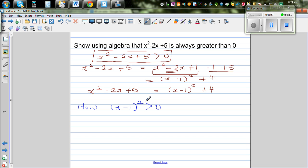This is always going to be positive because it's always greater than 0. It cannot be 0, it cannot be negative. It's always greater than 0. And this implies x minus 1 the whole squared plus 4 is greater than 0.